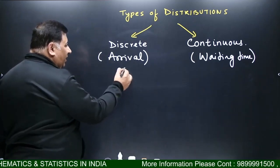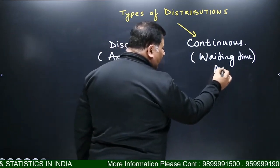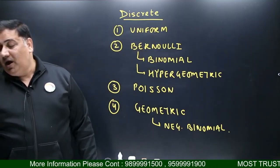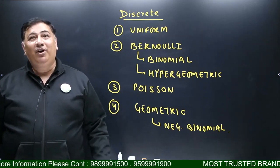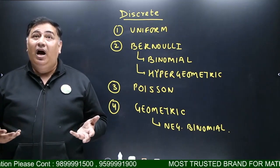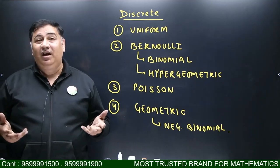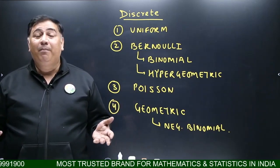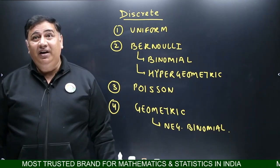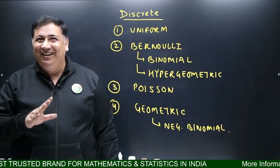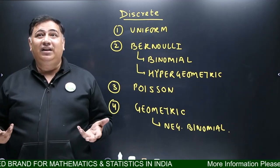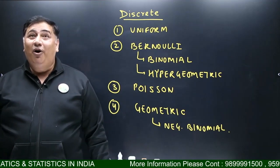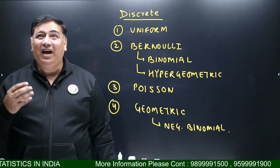We discuss arrival patterns and waiting time patterns. In discrete distributions we talk about these models: Uniform distribution — your arrival pattern is uniform, like a school uniform. Bernoulli distribution — whether you will come today or not. Binomial distribution — out of 10 students, how many will come to class. Hypergeometric — the difference between binomial and hypergeometric is sampling with replacement vs. without replacement. Poisson distribution — on average how many students will come to class. Geometric distribution — class won't start until the teacher arrives. In this way, based on genuine practical problems, we have these distributions.